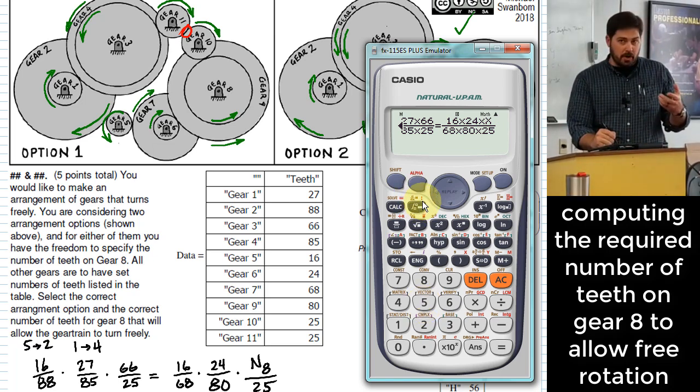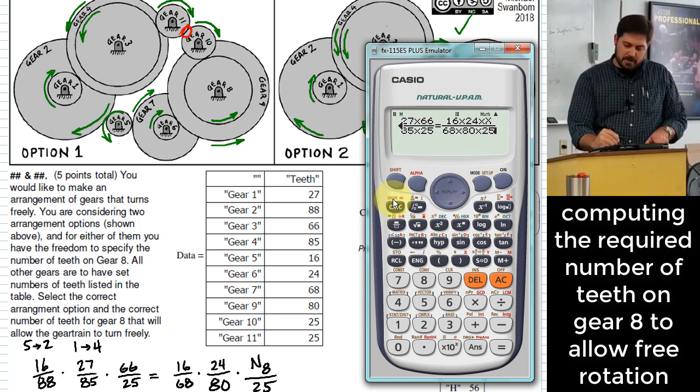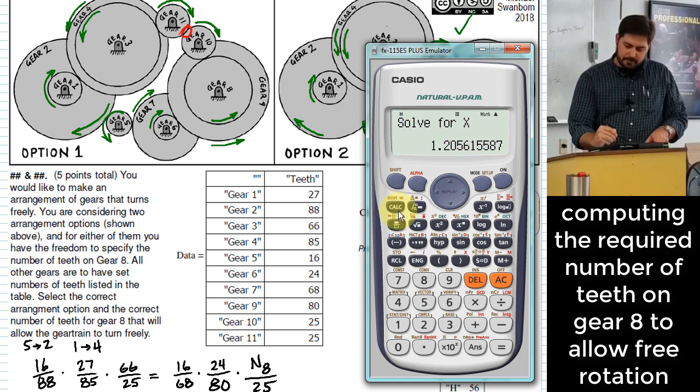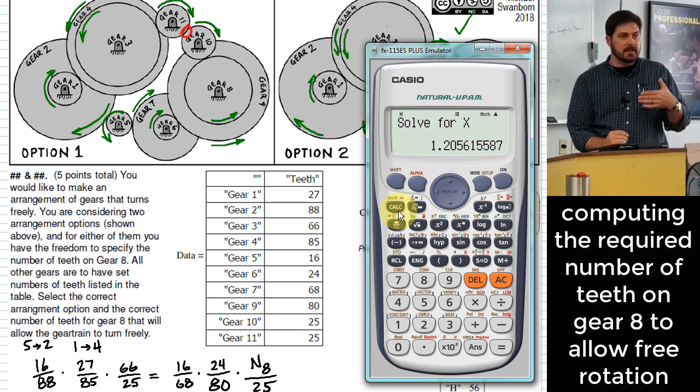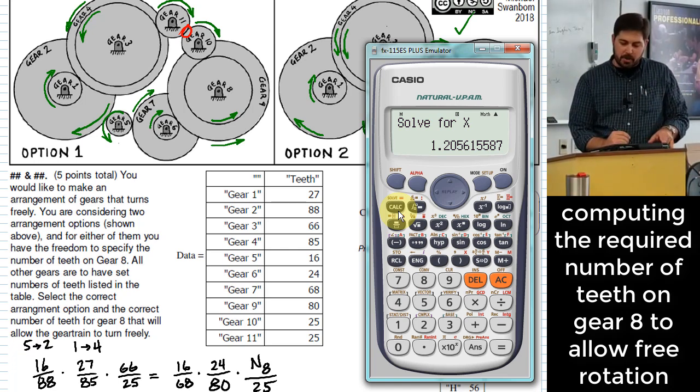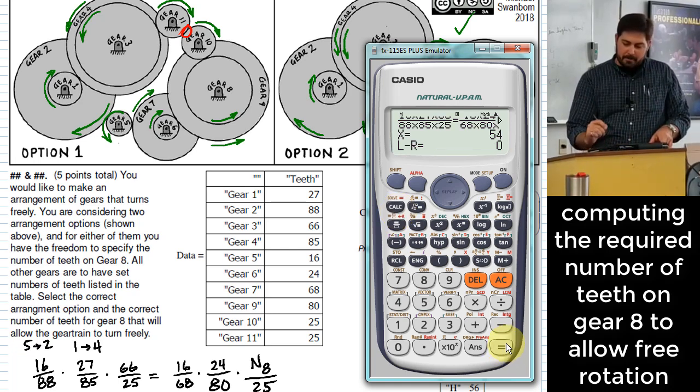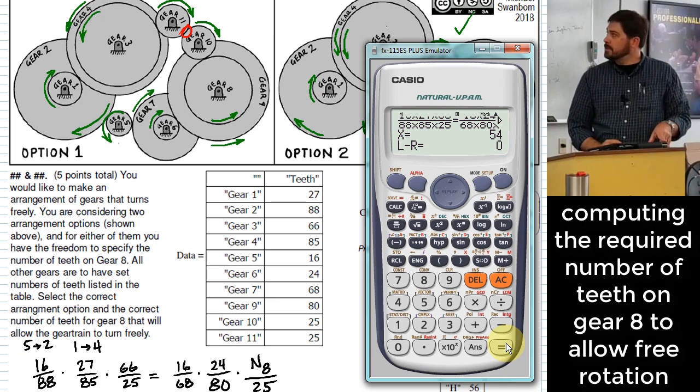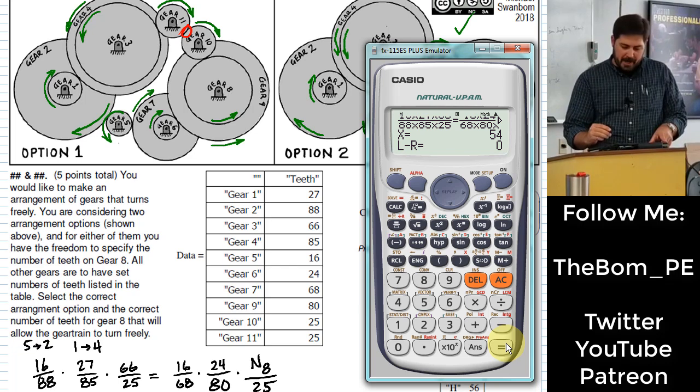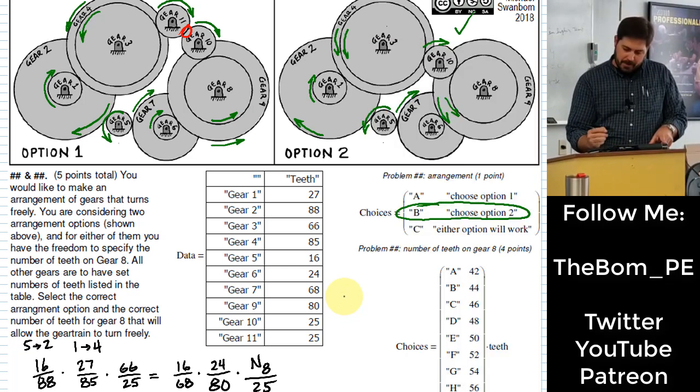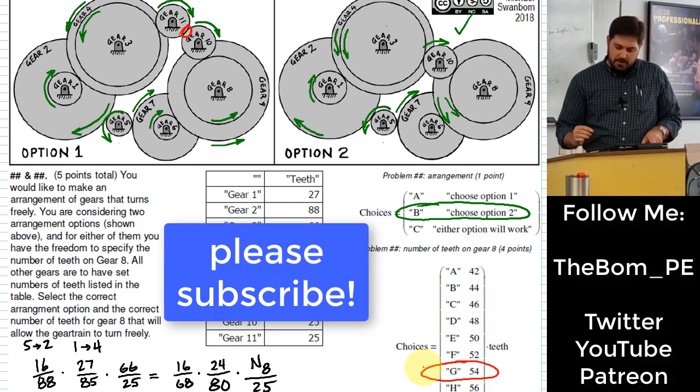And what this calculator will do is solve that equation for me. All you've got to do is hit shift and then above the calc key there you see it says solve. It does require you to have an initial guess, kind of like MathCAD does. For this problem there's really no limit on what we can choose for our initial guess. It will get the right answer. So hit equals tells me I need 54 there for my number of teeth on gear number 8. Hopefully that's one of the answers here. So the answer there is G.